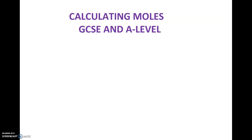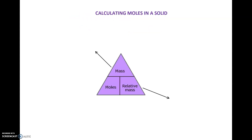So let's look at calculating moles in three states of matter: solid, liquid, and gas. For each you have a different formula. If you are asked to calculate the number of moles in a solid, the formula is: number of moles is mass over relative formula mass.